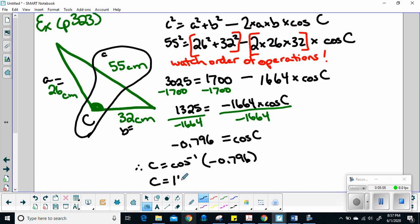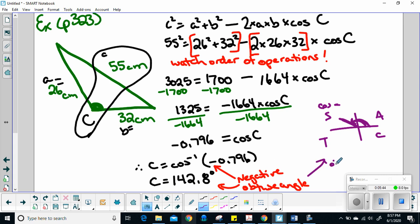Notice that this right here is a negative, and that results in an obtuse angle. Do you know all that stuff we did with CAST? Well, that's playing a role in here. Cosine is negative in this quadrant, so when I have an angle here, obtuse should have a negative cosine, so that's good.